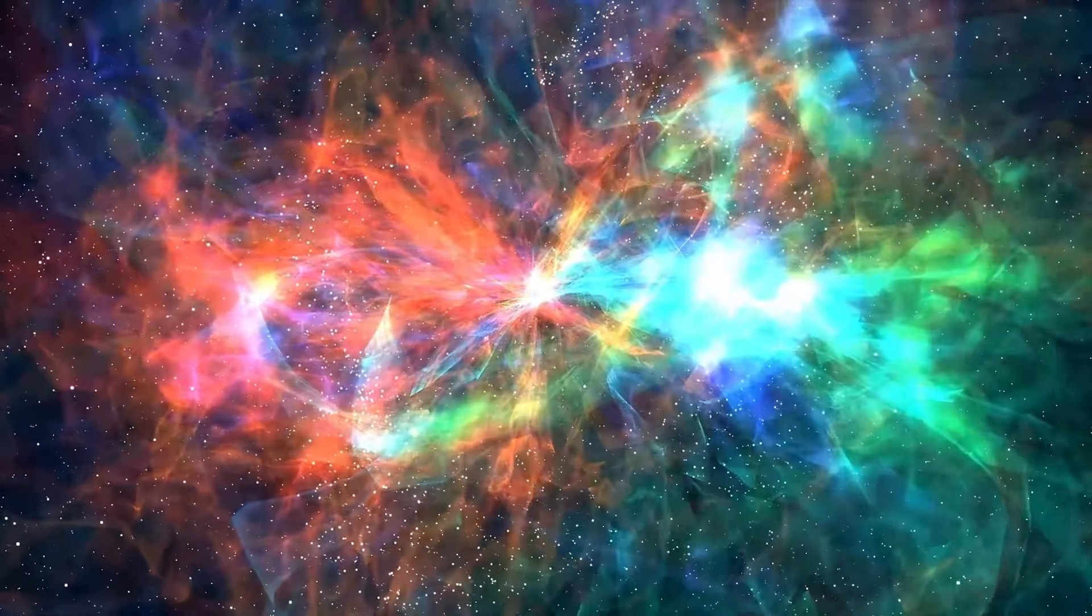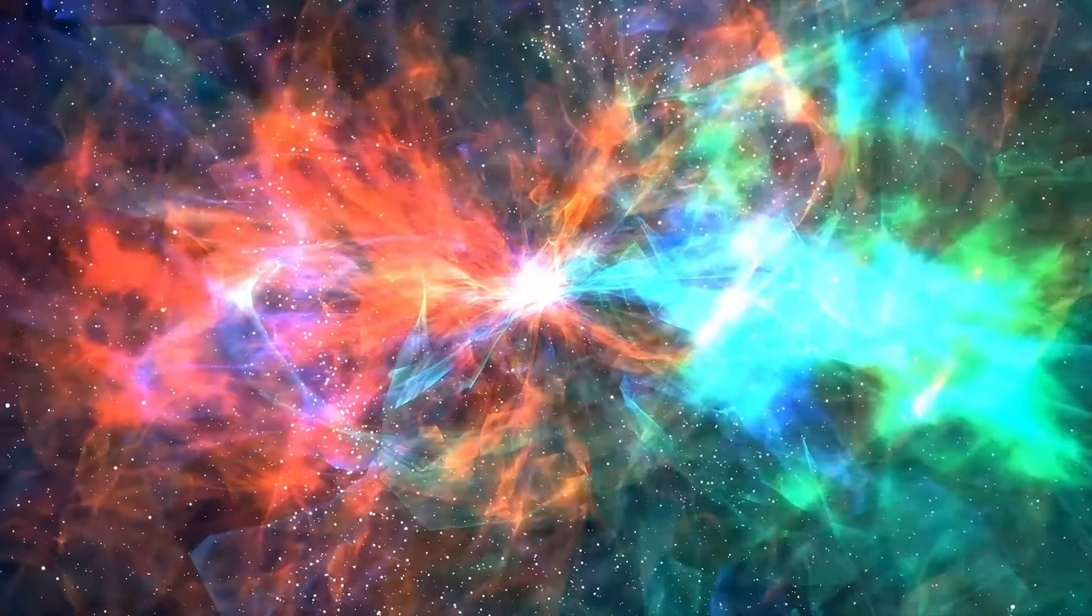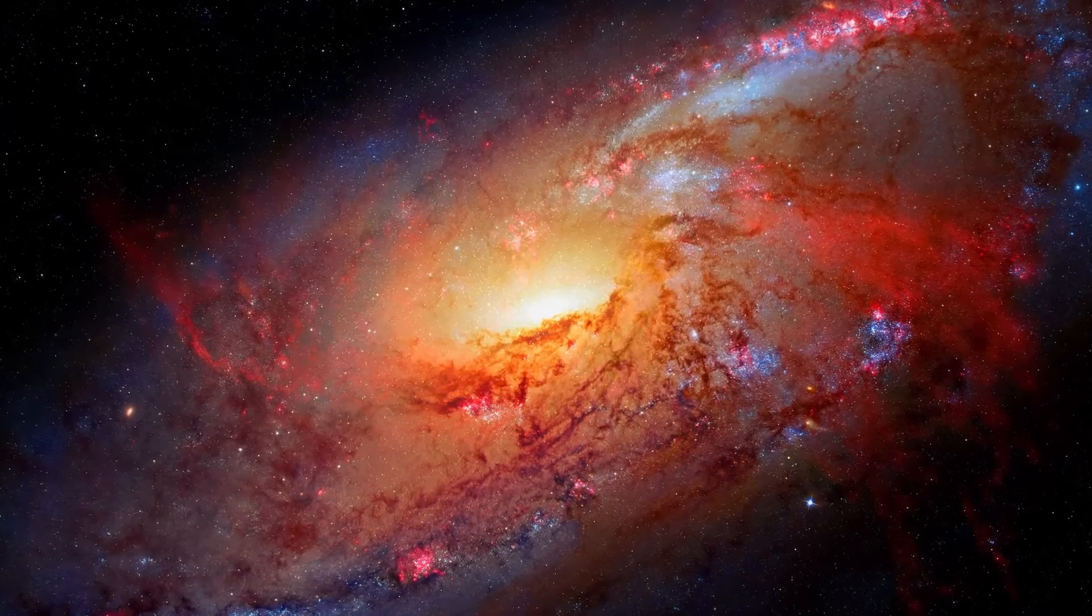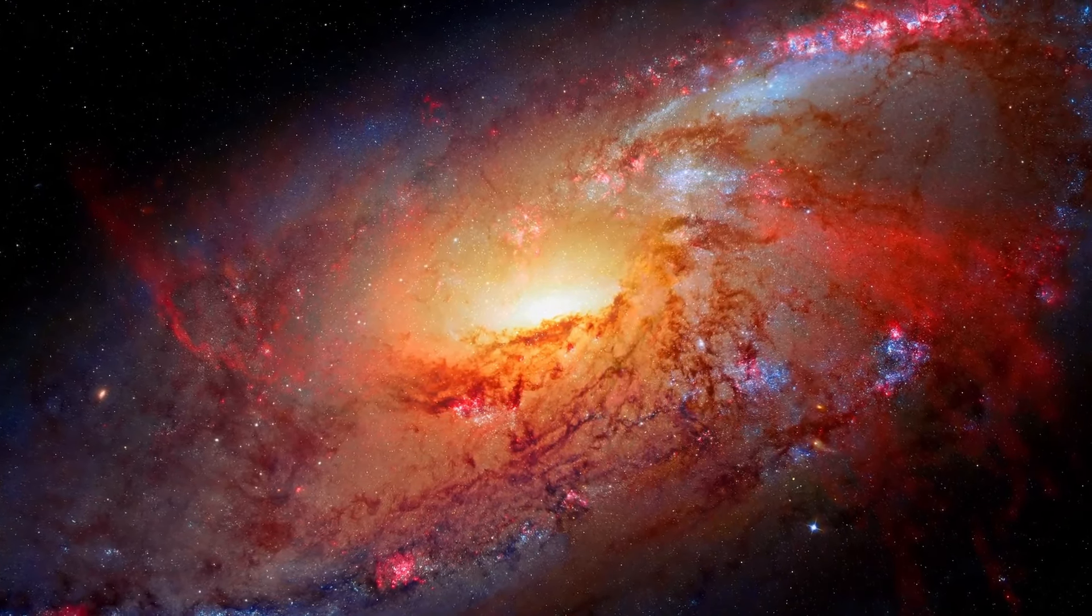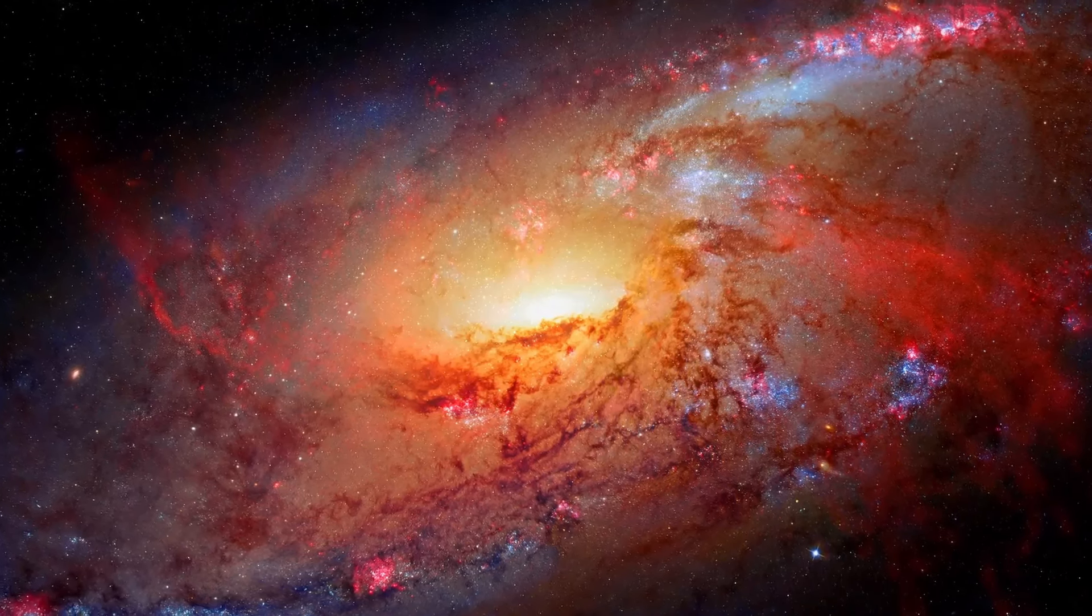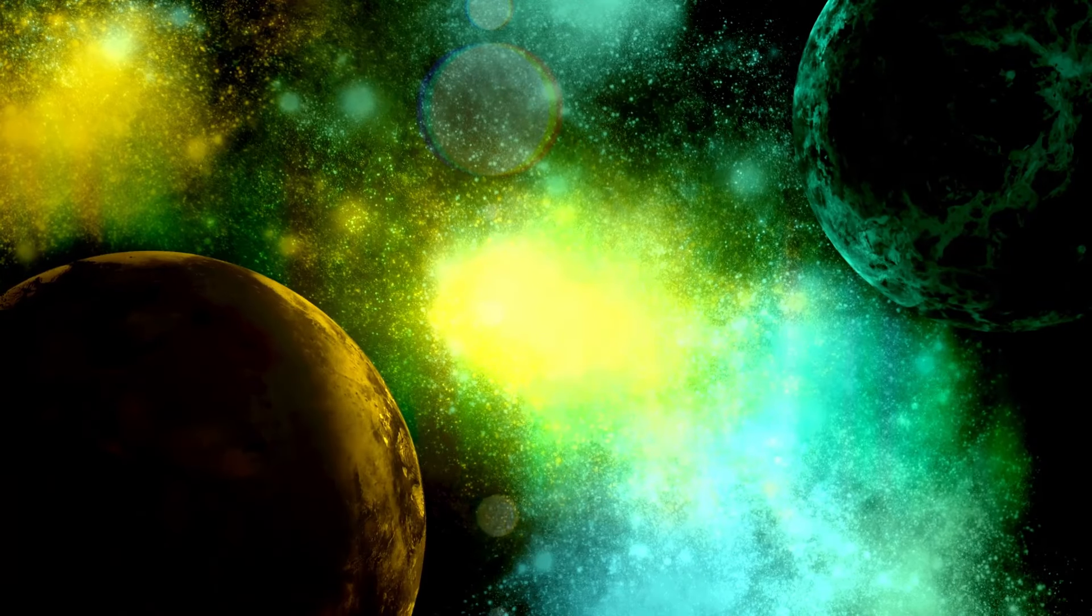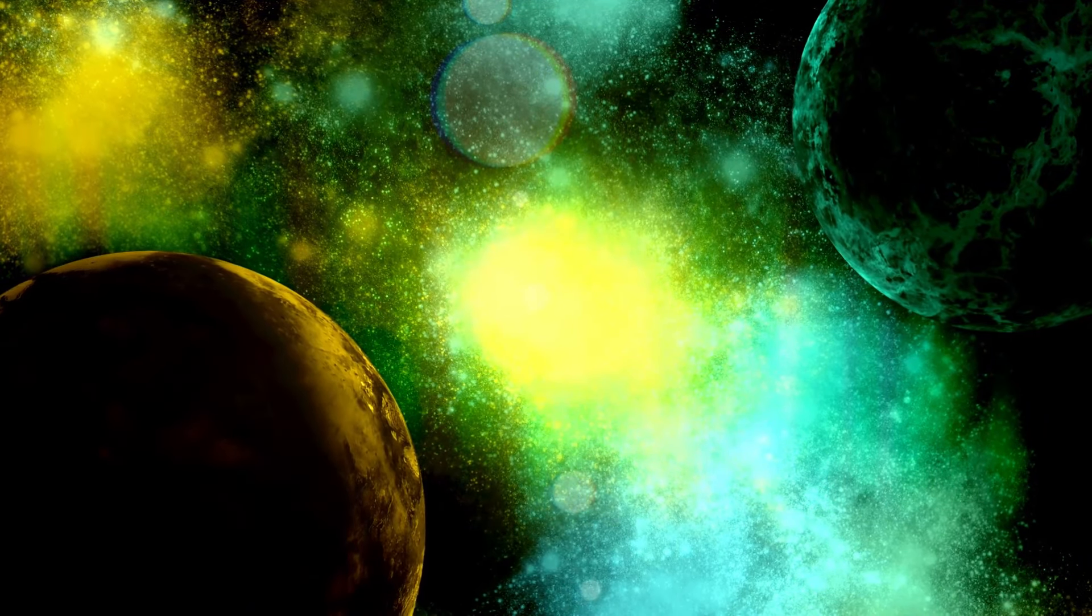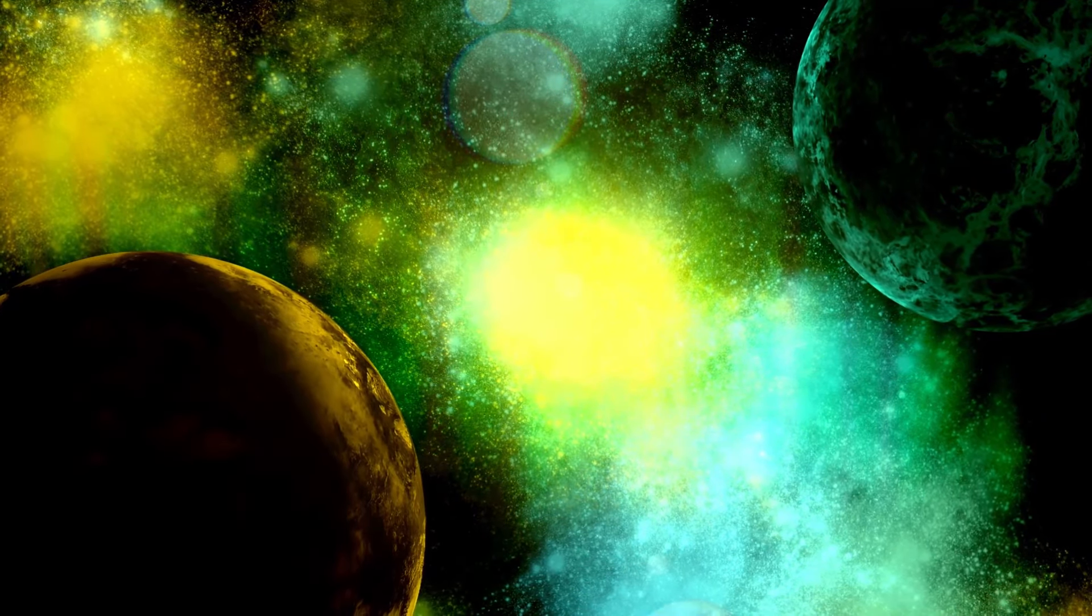Second, red supergiants are known for shedding massive amounts of material in their later stages. This process is crucial in shaping their evolution and eventual supernova explosions, yet how they lose this mass, at what rate, and what triggers these outbursts remains unclear. Betelgeuse, with its recent fluctuations, only adds to this prevailing uncertainty.